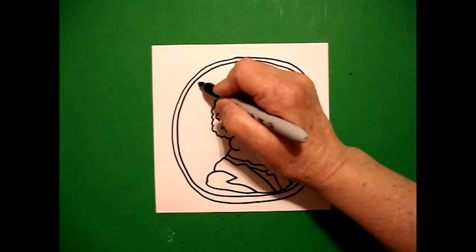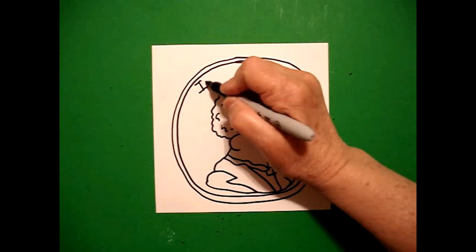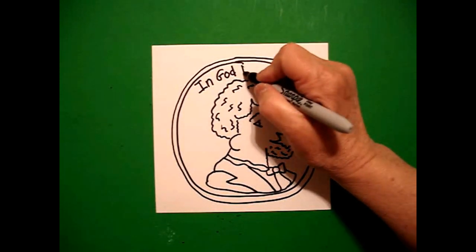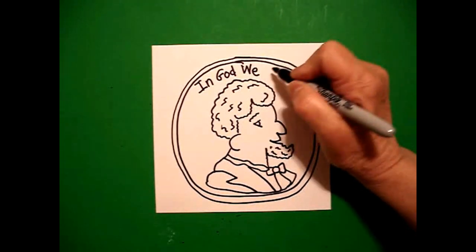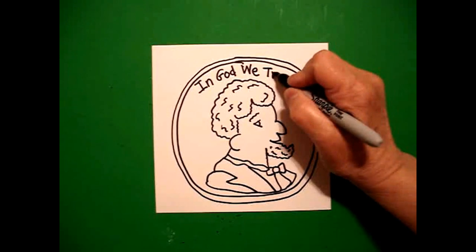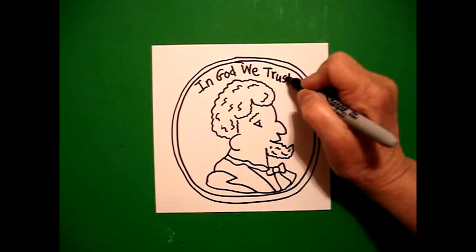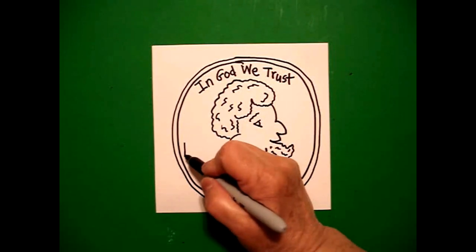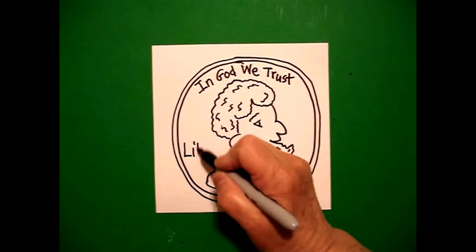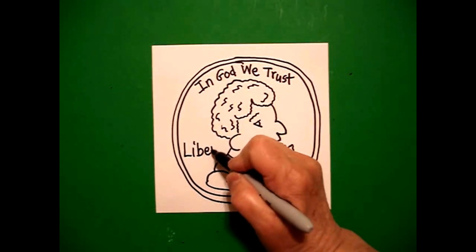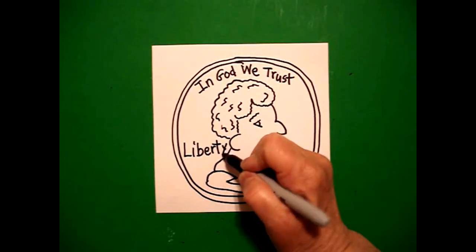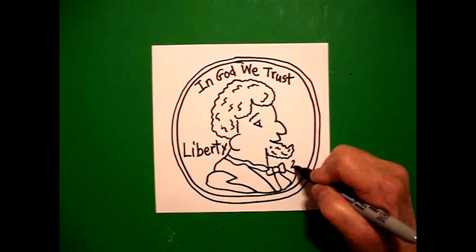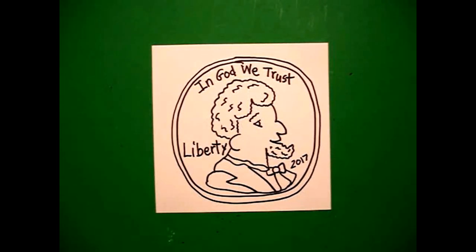On top, I'm going to write I-N-G-O-D. In God. We. W-E. Trust. T-R-U-S-T. Over here on the left hand side, I write Liberty. L-I-B-E-R-T-Y. And over here, teeny tiny, I'm going to write 2017, the year date.